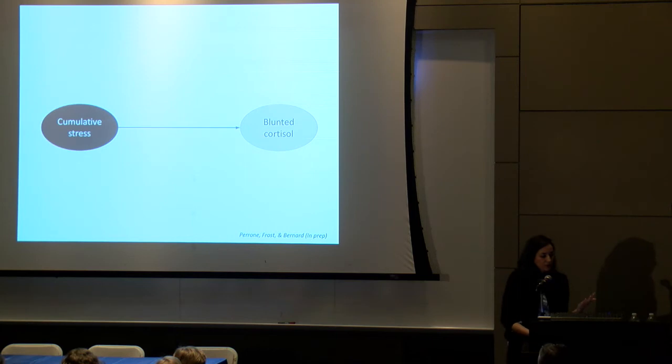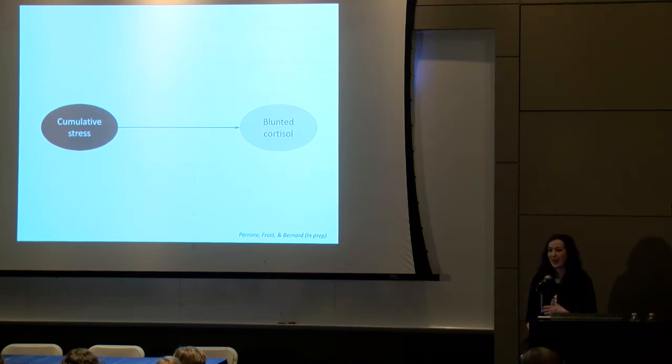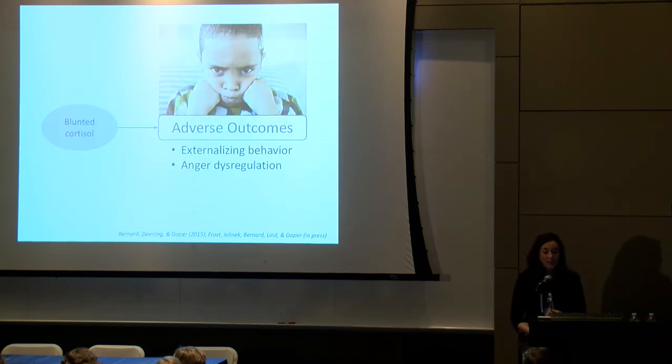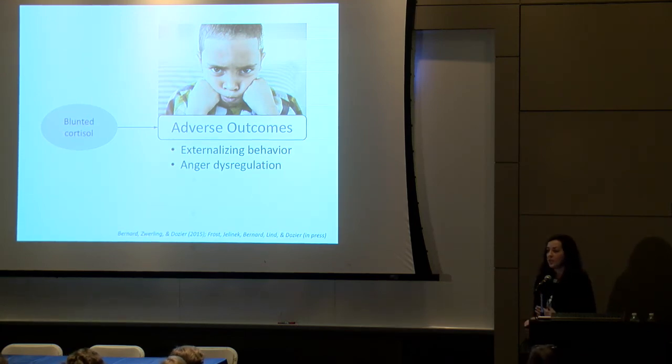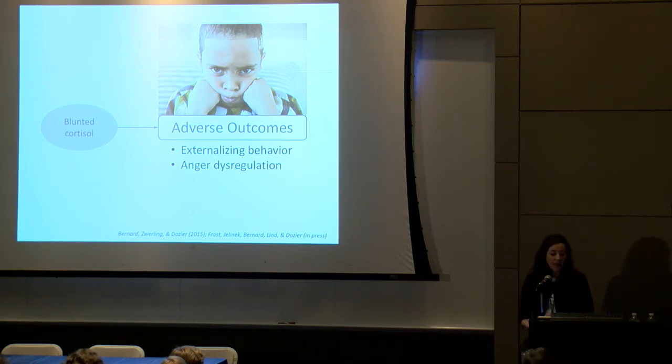A question, of course, is why care about cortisol? We care about it because, as Nim and Kim pointed out, it really has an effect on the developing brain. When we look at behavioral outcomes, we've seen in previous studies that this blunted cortisol rhythm is particularly associated with externalizing behavior, like being oppositional and defiant and aggressive, as well as difficulty regulating anger.